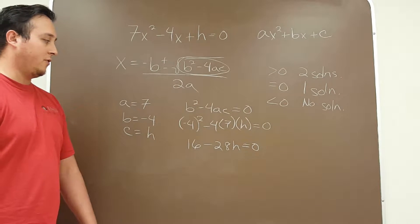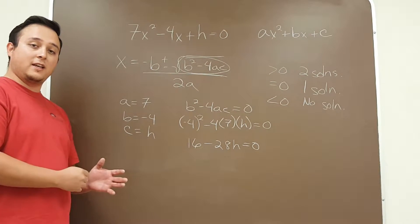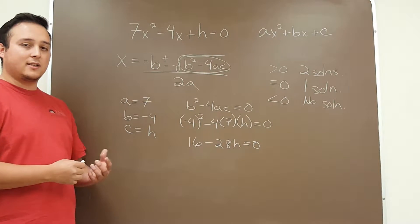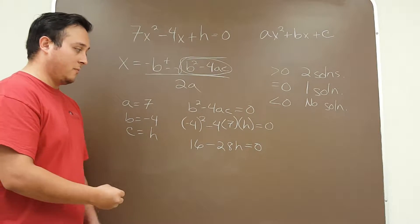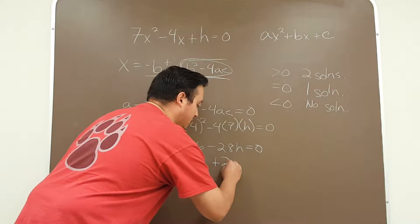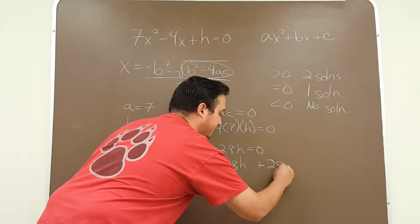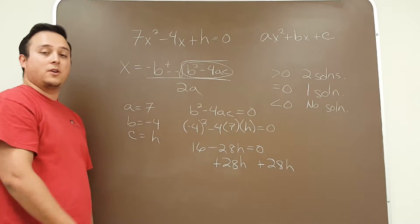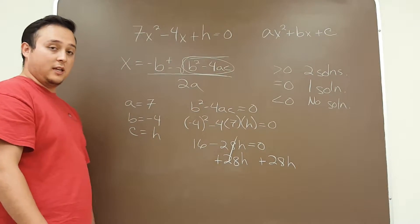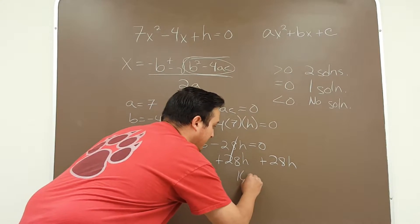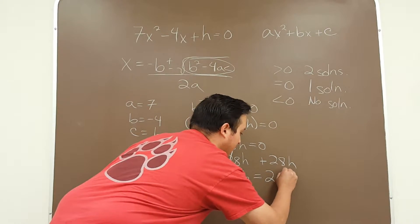Now at this part a lot of people think that you have to have a variable on the left hand side of the equal sign. That's not necessarily true. You can have a variable on any side of the equal sign. So for me it's going to be easier if I just add 28h to both sides. Remember whatever you do to one side of the equation you have to do to the other. Left hand side 28h cancels. You have 16 is equal to 28h.